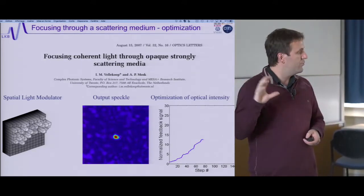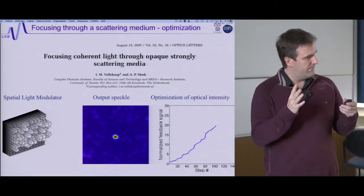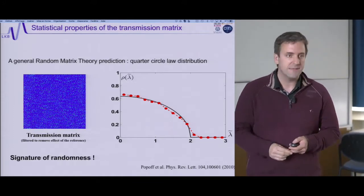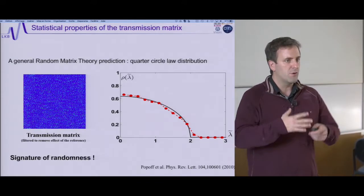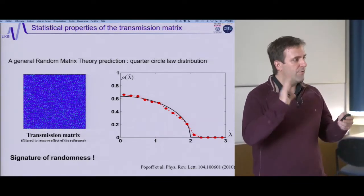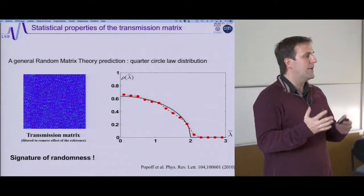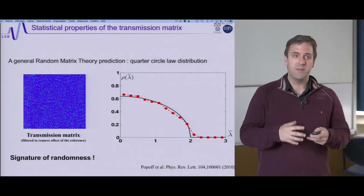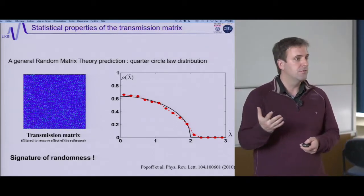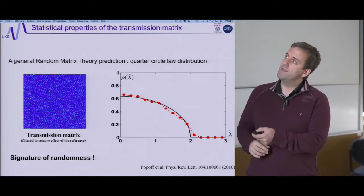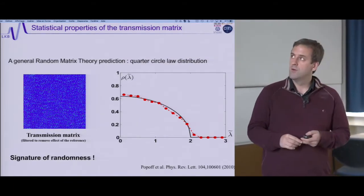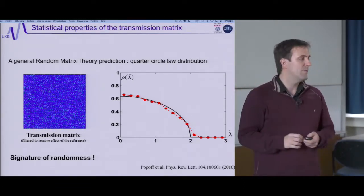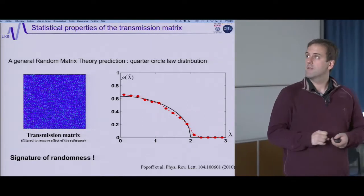The basic knowledge enabling this is that the medium is linear — very complex but linear — and we can exploit the transmission matrix of the medium. If you disregard mesoscopic and interference effects, every input gives you a speckle and every speckle is uncorrelated, so the transmission matrix is completely random. Looking at the eigenvalue distribution of the transmission matrix, we can retrieve predictions from random matrix theory: for a totally uncorrelated random matrix, you get the quarter circle law, which our measured matrix follows very well — a signature of randomness.